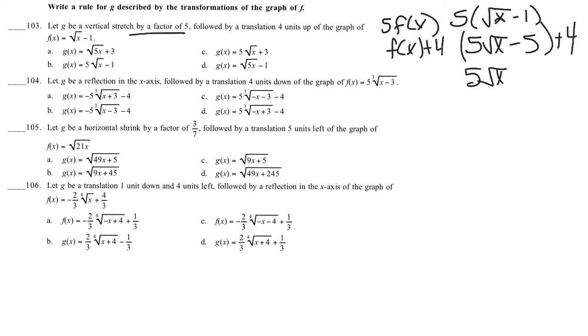And then we can add 4, so 5 square root of x minus 1, which leaves me with B.